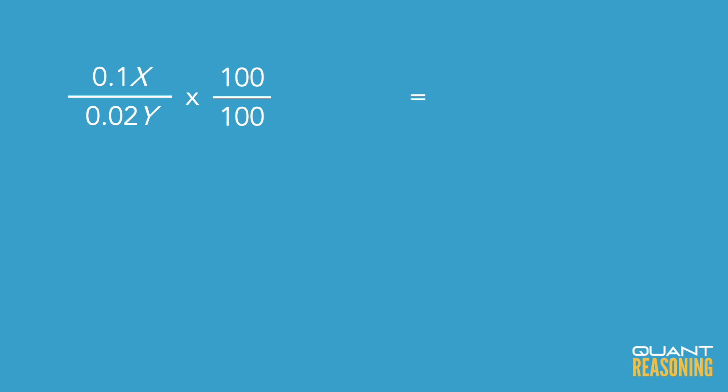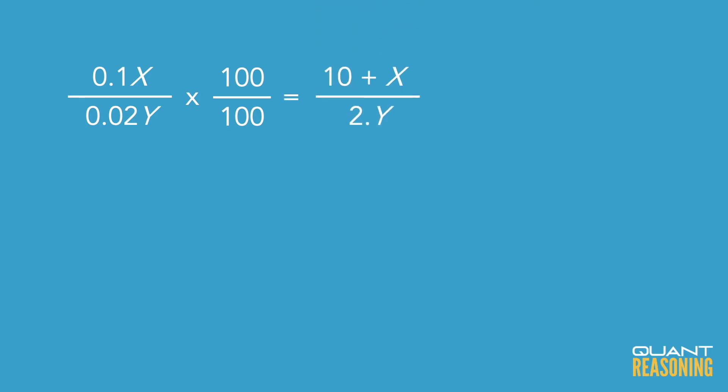So that's our numerator: 10 plus X. And the denominator, when we expand by a factor of 100, instead of 0.02Y, we'd have essentially 2.Y. And Y is some non-zero digit. So the denominator is anywhere between 2.1 and 2.9.